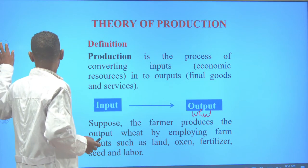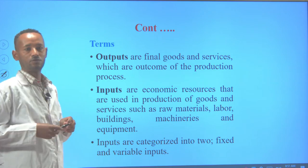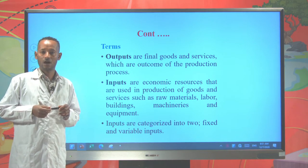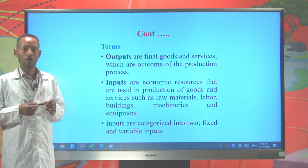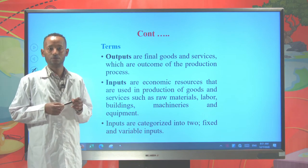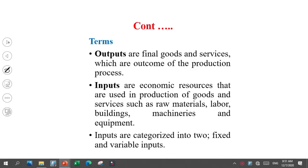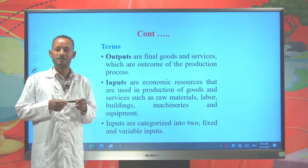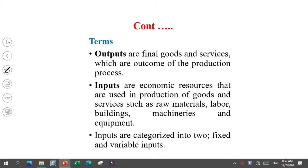Now let's see some of the terms used to describe the theory of production. First, output is the final goods and services, which is the outcome of the production process. In our example, if the farmer produces wheat using the inputs land, labor, capital and the likes, the output is the wheat. But inputs are those resources which can be used for the production of outputs — in our example, land, labor, and fertilizer are considered as inputs.